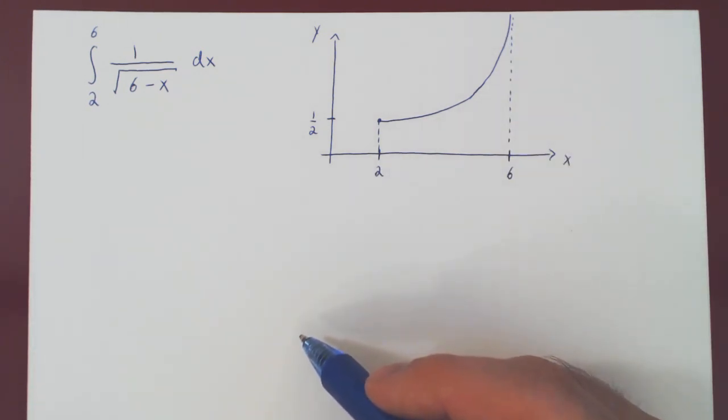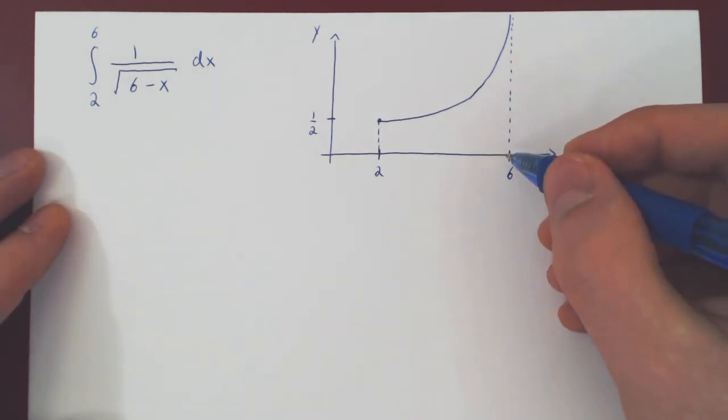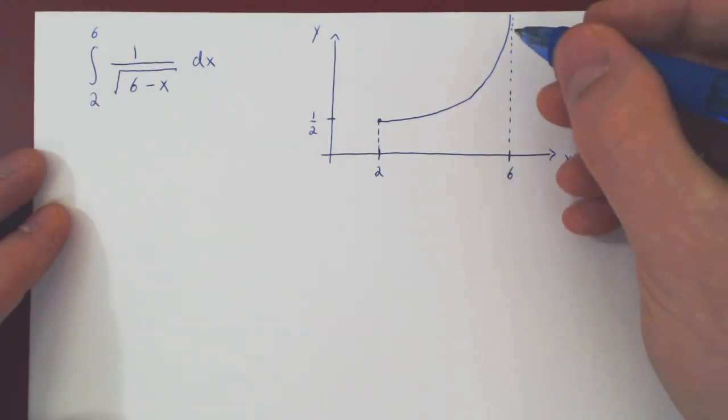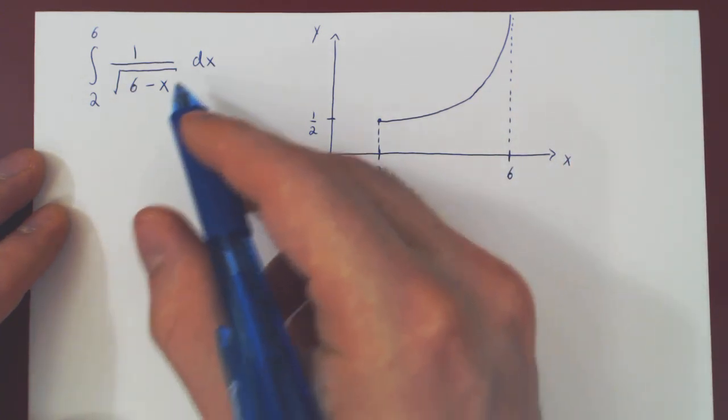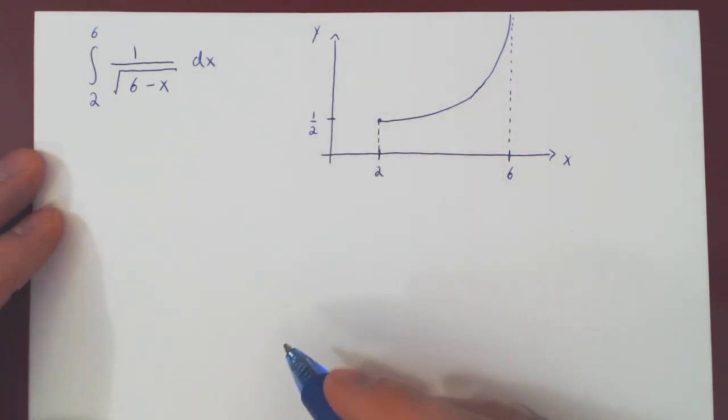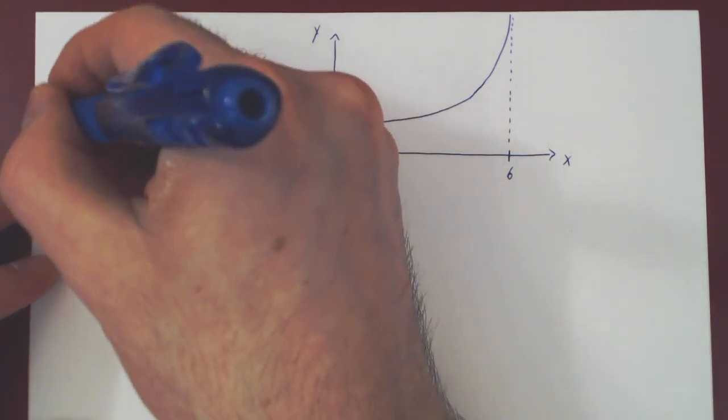Once again we ask, well how can we first avoid the problem, which here is the discontinuity of our function at x equals 6, and how can we then, with a limit, go back to the original improper interval?